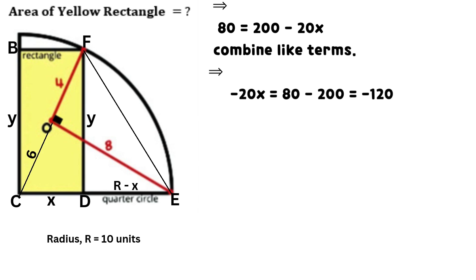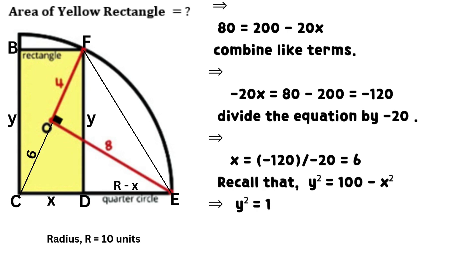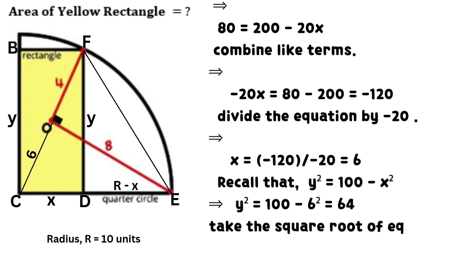Simplify: 80 equals 200 minus 20 times X. Combine like terms: negative 20 times X equals 80 minus 200, which equals negative 120. Divide the equation by negative 20. It implies that X equals negative 120 divided by negative 20, which equals 6.